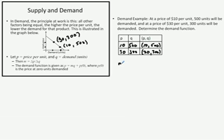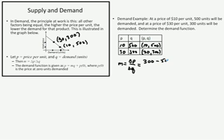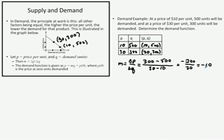Our first job is to determine the slope of that line. The slope of the line is the change in P over the change in Q. We write delta P over delta Q to represent that. To find this change, we subtract: we take the quantity value 300 minus 500 in the numerator, and in the denominator we take our price $30 minus $10. Working out our numbers, that's negative 200 divided by 20, which means our slope is negative 10.